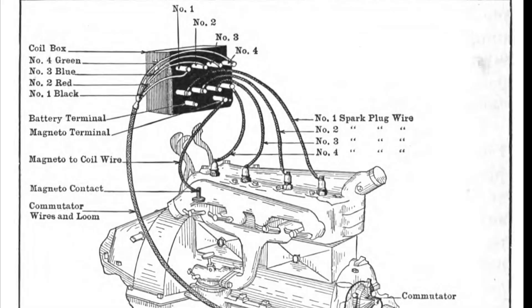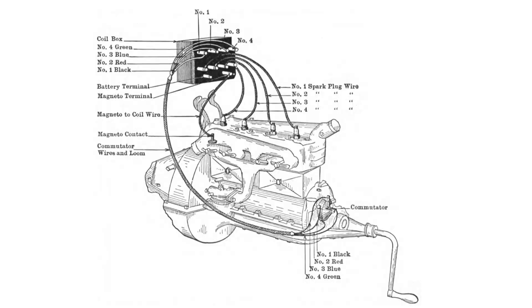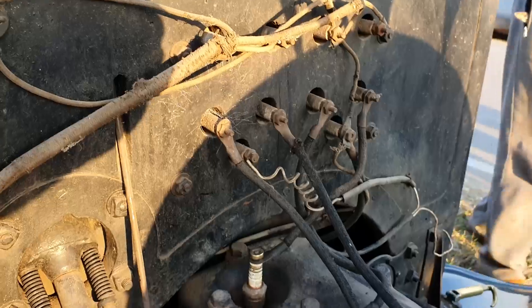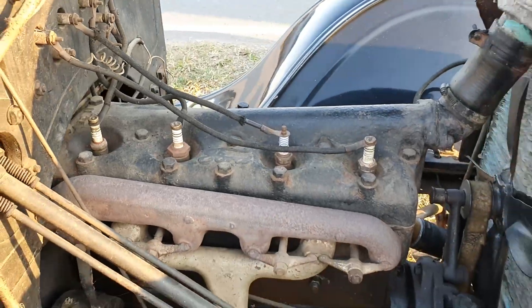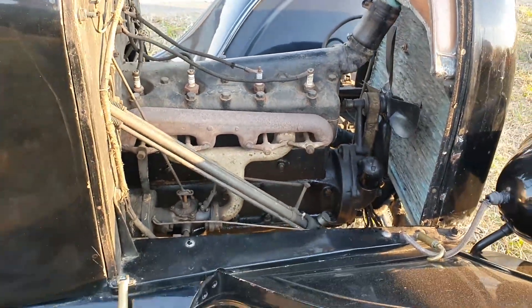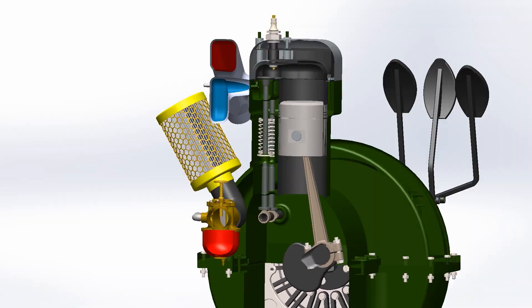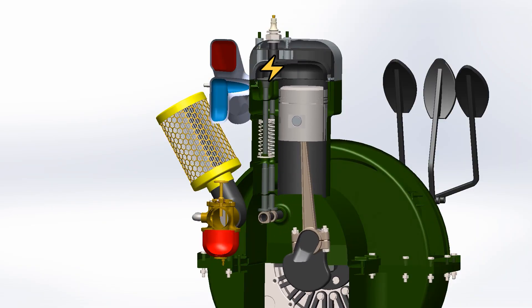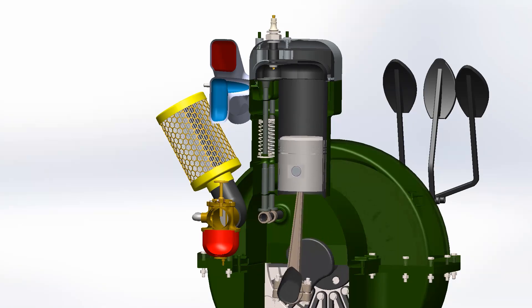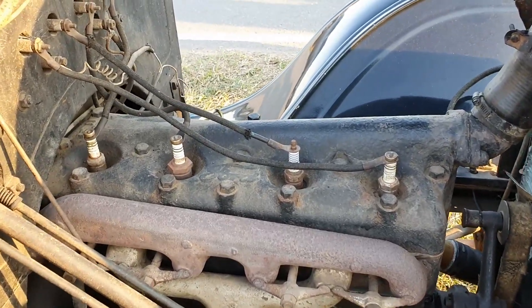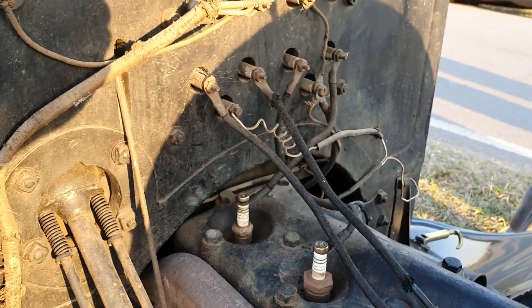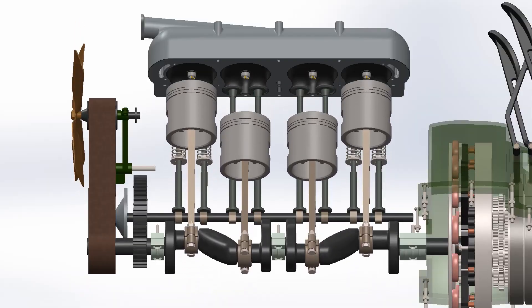Finally, we will go to the ignition or spark system. There is no high-voltage distributor. The job is done by a box with four individual multi-spark coils called trembler coils. These coils are driven by a low-voltage commutator, making it more expensive but also more reliable, ensuring that anything entering the cylinder will be burned. The multi-spark system means that if the first spark fails to ignite the mixture, the next one will, reducing misfires to a minimum. The plugs and wires were simple and did not have any anti-noise technology, resulting in a stronger spark.